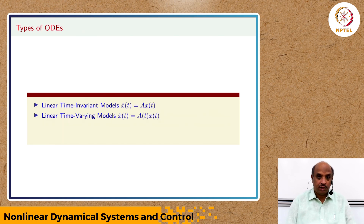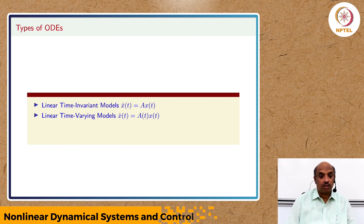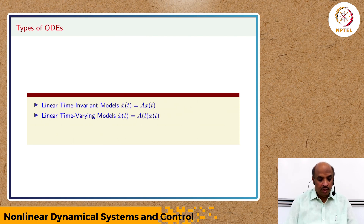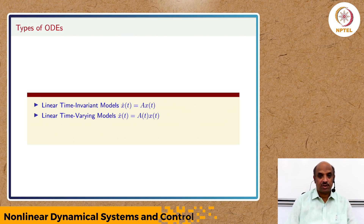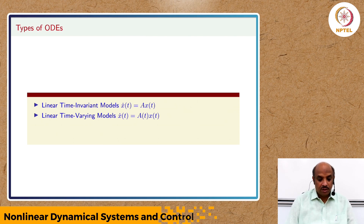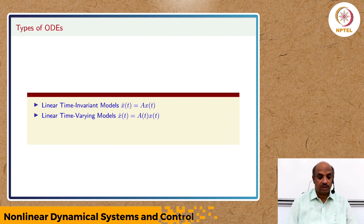If we make things slightly more complex but still stay in the world of linear systems, we have linear time-varying models. The difference between time-invariant and time-varying is that a becomes a function of time. In linear time-invariant models, it does not matter where you fix your starting time. Whereas in linear time-varying models, the entire behavior depends on where you start — it actually matters whether you started on the first or second of April.